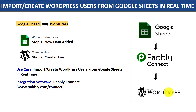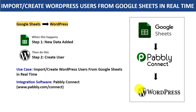You have two choices. The first choice is to copy all the details of the content writers, sort them out, and create them as a user individually in WordPress. Now this process is actually very repetitive and tiresome. So I would suggest that you bring in some automation so that whenever new data is added in bulk in Google Sheets, it automatically creates a user in WordPress.